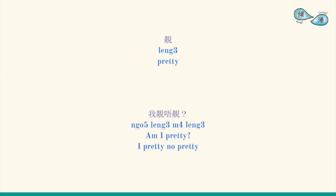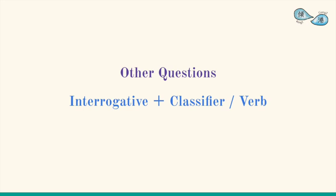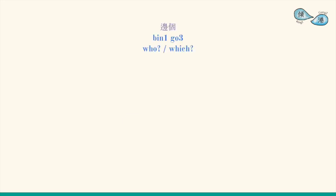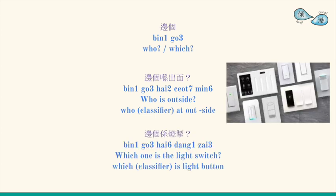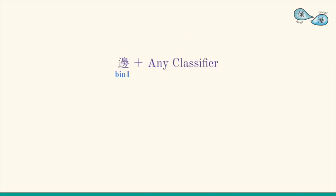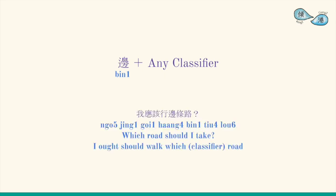That's all for yes-no questions. For most other questions, the structure is an interrogative plus a classifier or a verb. 邊個 can mean 'who' or 'which'. For example, when someone knocks on the door, you can say 邊個係出面? (Who is outside?) or 邊個係登仔? The classifier 個 can be substituted by any other classifier, for example: 我應該行邊條路? (Which road should I take?)